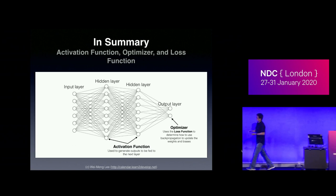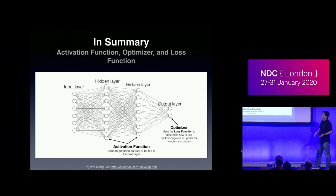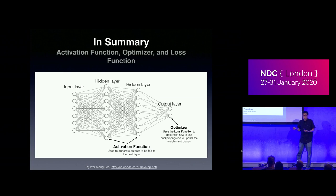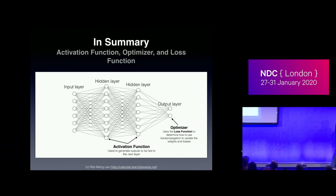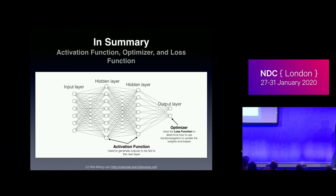In summary: we use activation functions at every layer. We use the loss function to calculate how well the model is performing. Then we use an optimizer like SGD to backtrack and update the weights and biases so the model learns and makes better predictions. It's now about 5 o'clock, so let's move on to some demos.